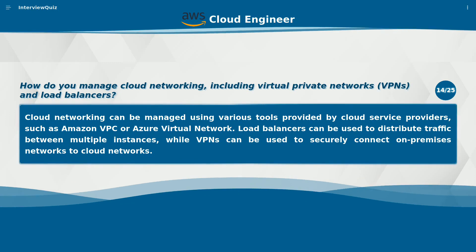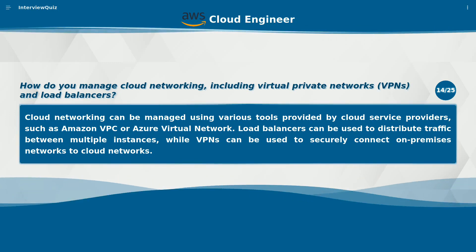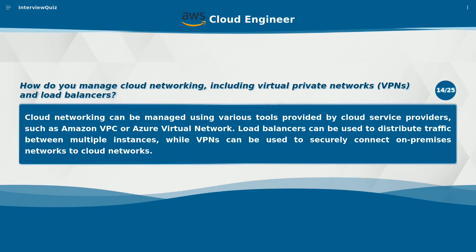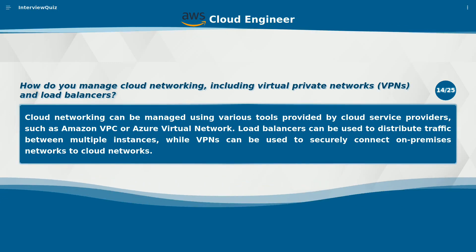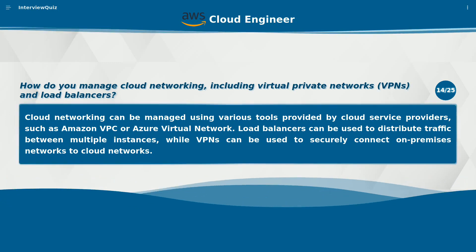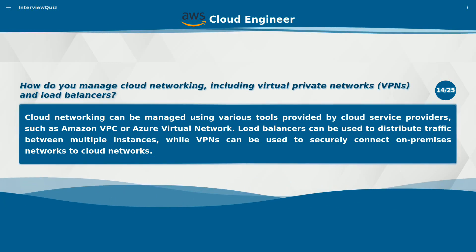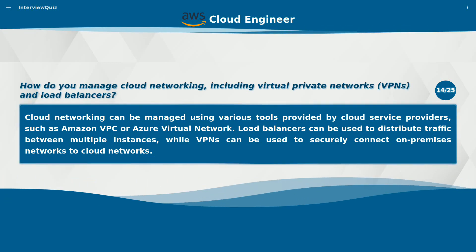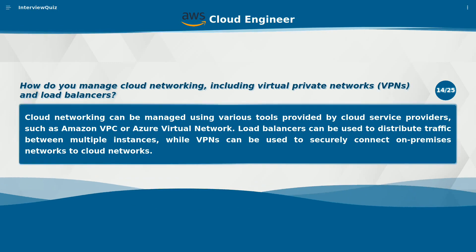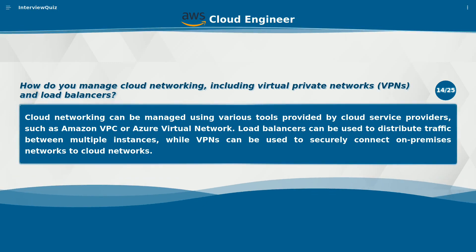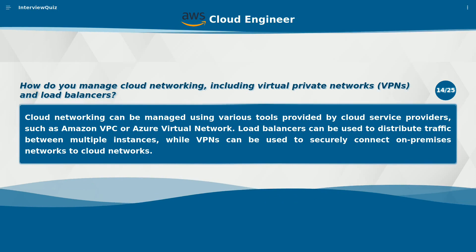How do you manage cloud networking, including virtual private networks (VPNs) and load balancers? Cloud networking can be managed using various tools provided by cloud service providers, such as Amazon VPC or Azure Virtual Network. Load balancers can be used to distribute traffic between multiple instances, while VPNs can be used to securely connect on-premises networks to cloud networks.